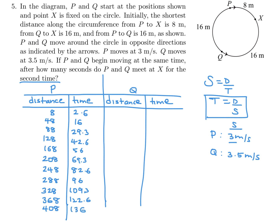Now the same for Q, but Q's first distance from Q to X is 16. Then keep adding 40 for each full rotation: 56, 96, 136, 176, 216, 256, 296, 336, 376, 416.